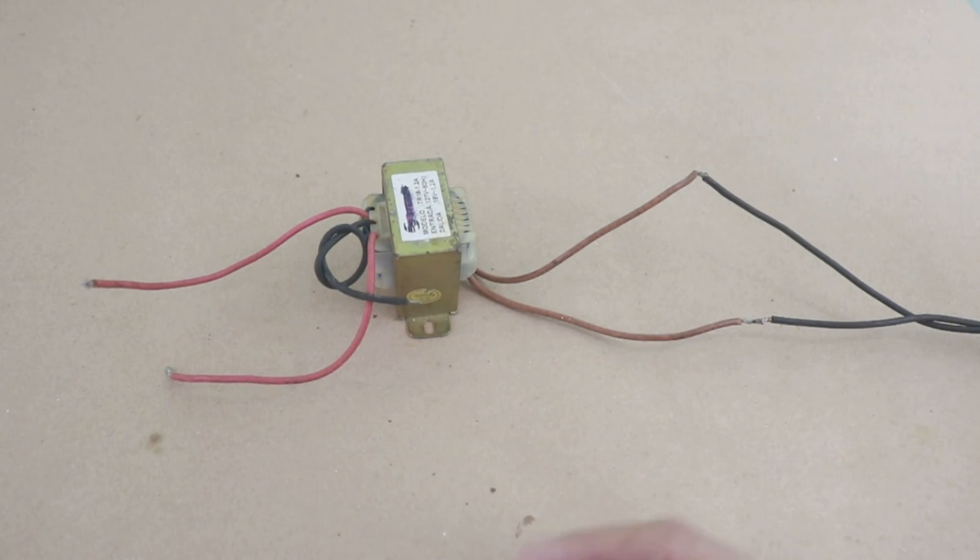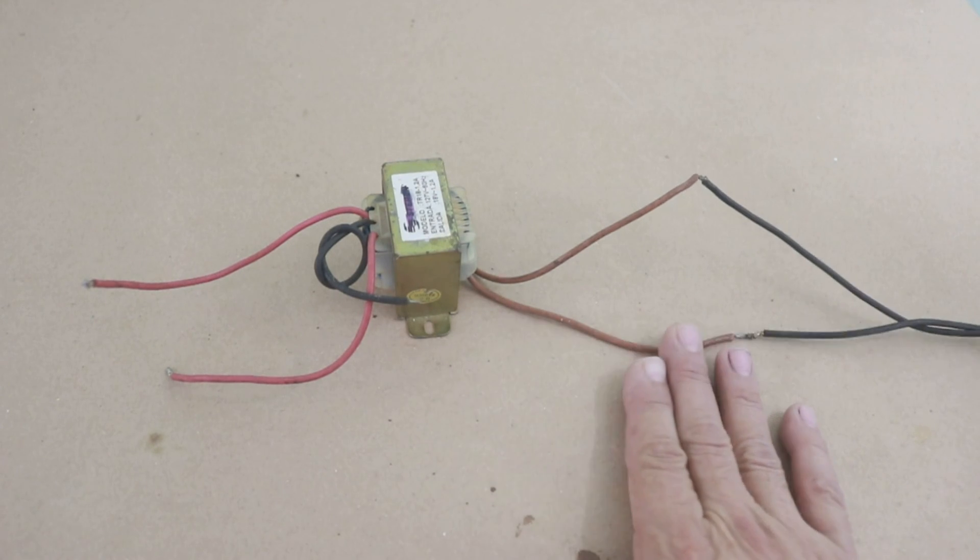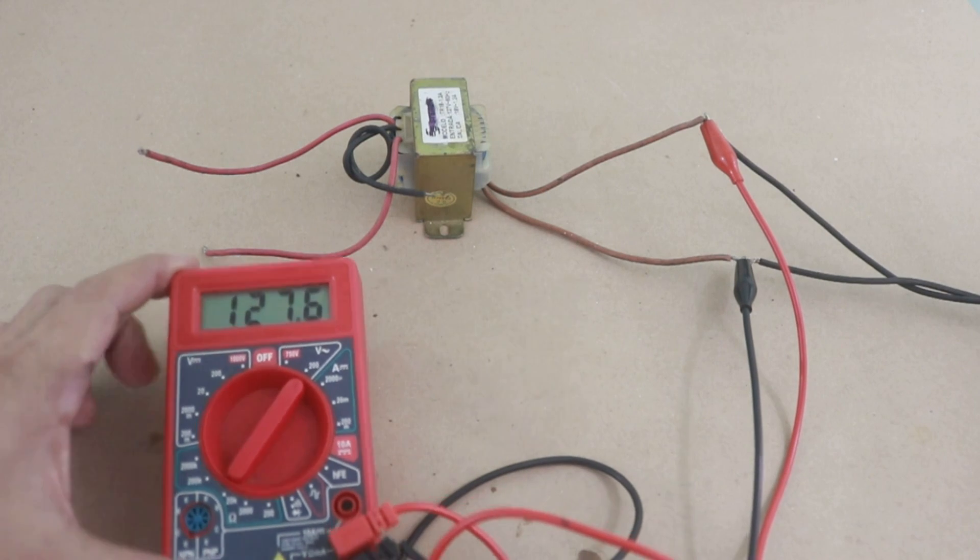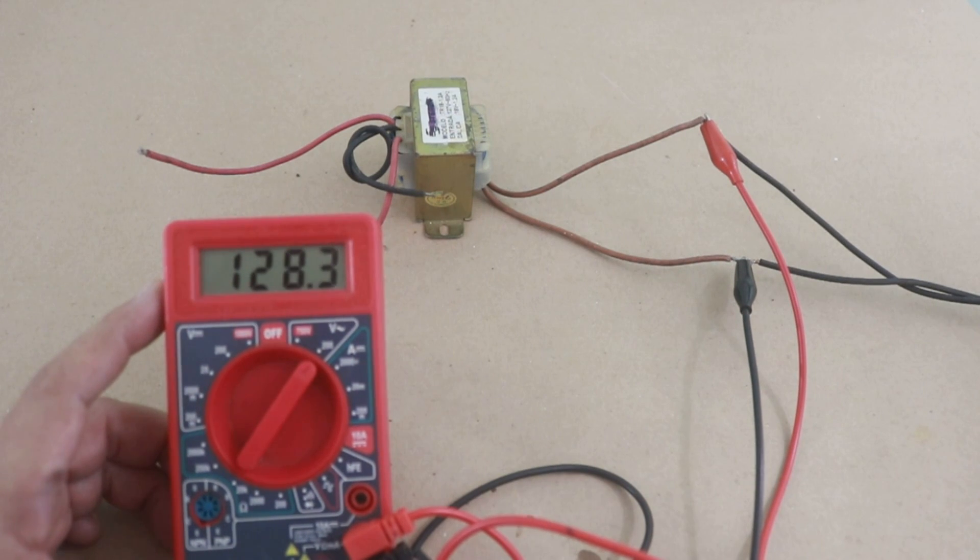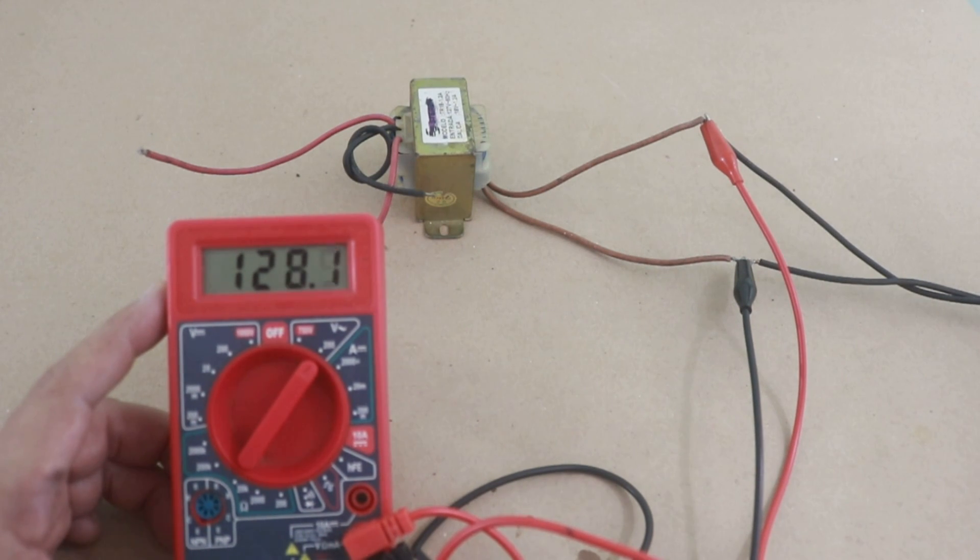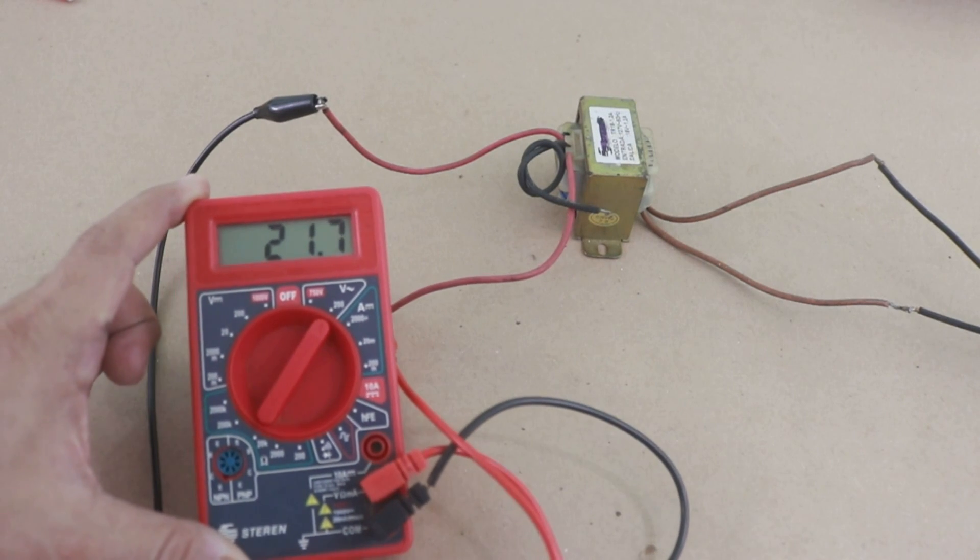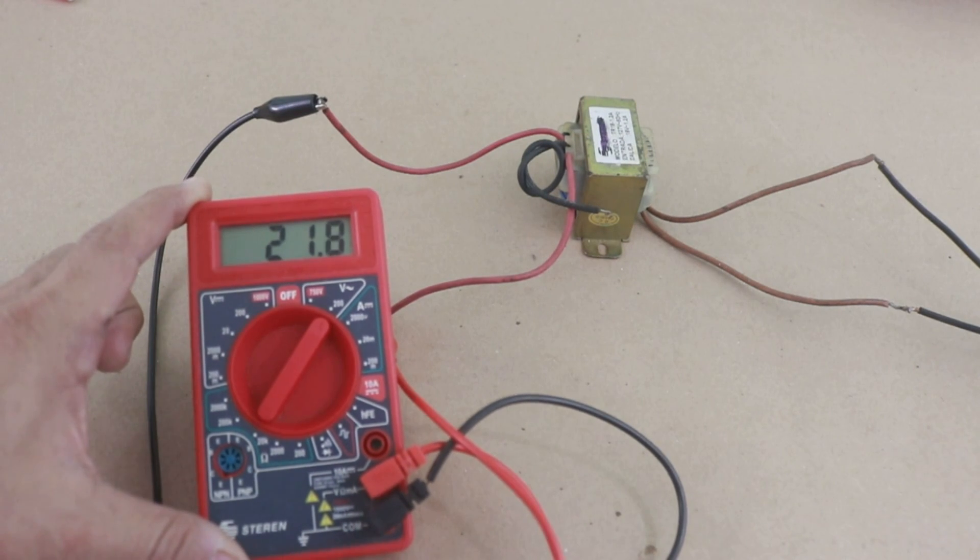First let's check with the multimeter the real values of input and output. Okay this is the voltage at the input. We can see that it is around 128 volts. The output of the transformer in the secondary we have almost 22 volts.